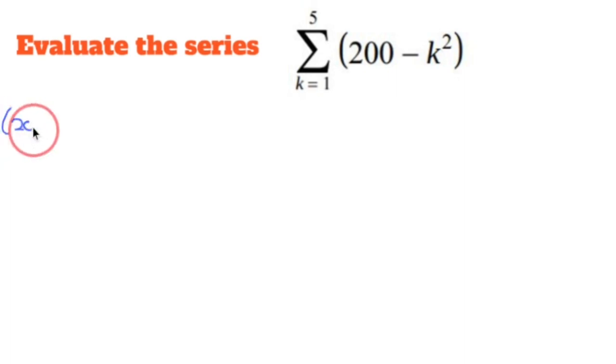Let's do 200 minus 1 squared, which is 1, plus 200 minus 2 squared, which is 4, plus 200 minus 3 squared, which is 9